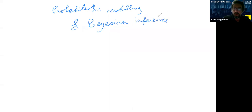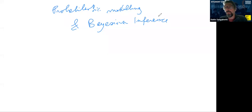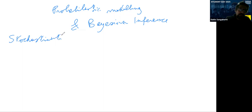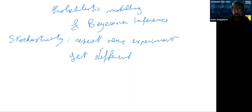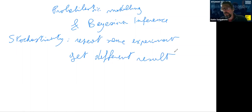This is the spring college in complex systems, and most complex systems are not fully reproducible — they exhibit some stochasticity. What do I mean by stochasticity? If we repeat the same experiment, we get a different result in general. It's not a deterministic method.